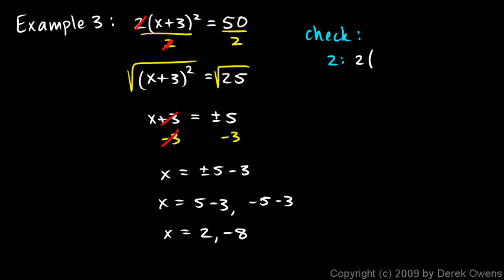So this is going to be 2 times 2 plus 3 squared, and that should equal 50. If this solution is correct, this statement will be true. So 2 times 5 squared is 50, and 5 squared is 25. 2 times 25 is 50. You can see that works.